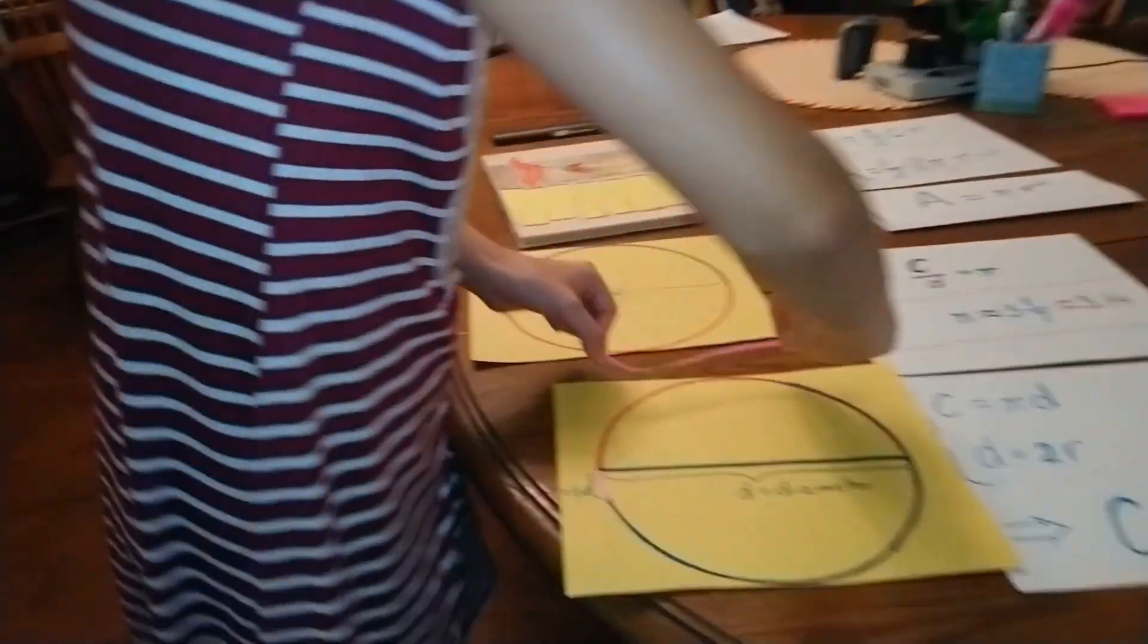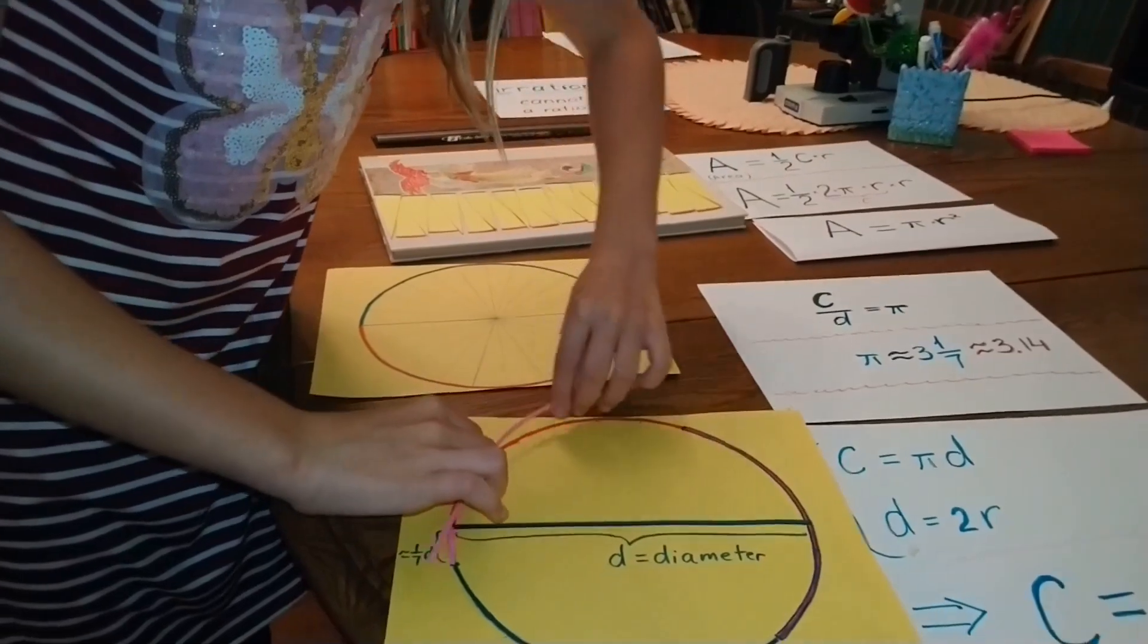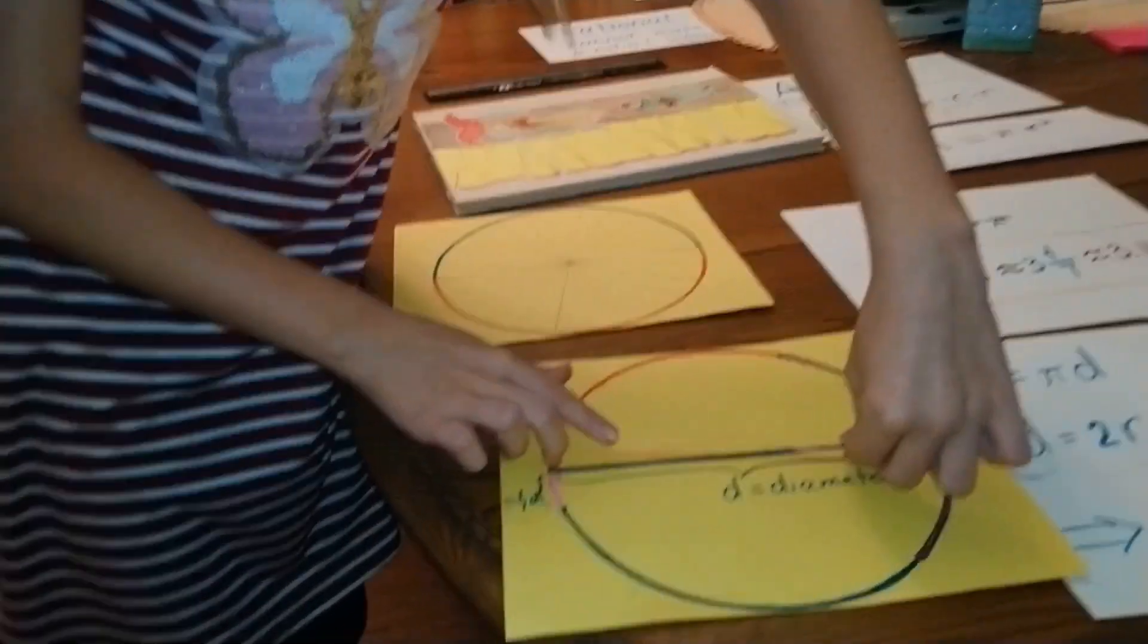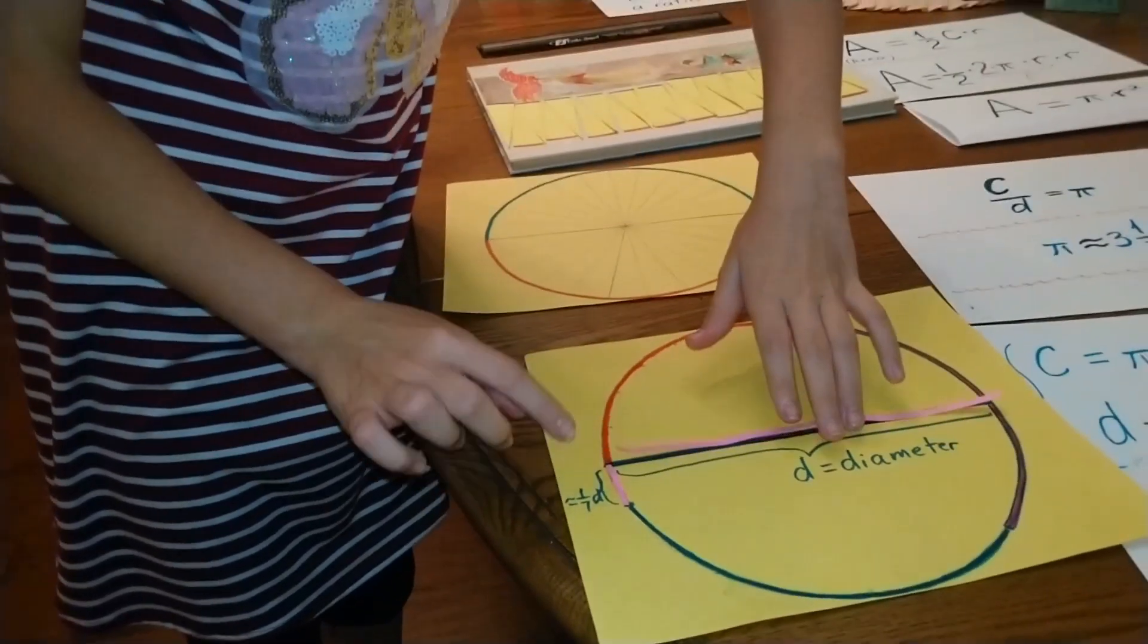So there is one, two, three, and a little bit more, almost one-seventh.